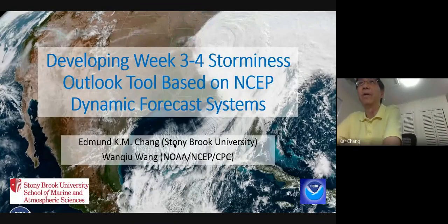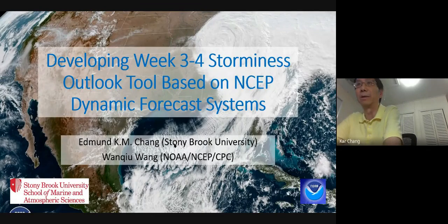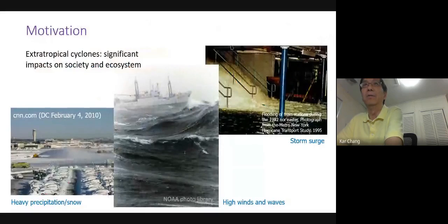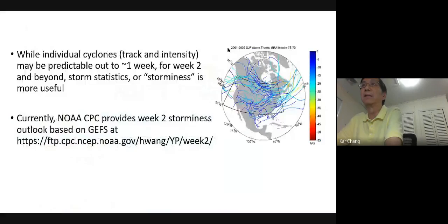Today I'm going to talk about developing a week three to four storminess outlook based on NCEP dynamic forecast systems, in collaboration with Wenjiao Wang of NOAA CPC. By storminess, I mean winter storms or extratropical cyclones. Extratropical cyclones provide significant impacts on society and ecosystems. Individual storm tracks generally can be predicted out to about a week, but for week two and beyond, storm statistics or storminess are more useful.